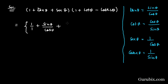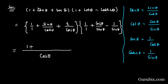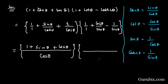Sec θ is written as 1 / cos θ. In the second bracket, cot θ is written as cos θ / sin θ, and cosec θ as 1 / sin θ. Taking the LCM of the first bracket gives cos θ, and we get (sin θ + cos θ + 1) / cos θ. Taking LCM of the second bracket gives sin θ.